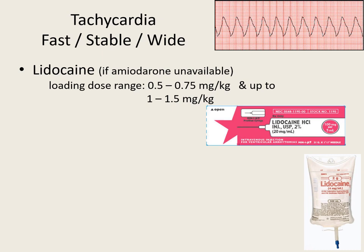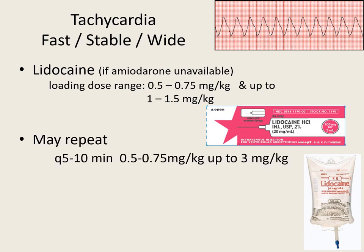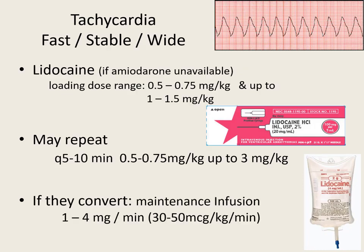So I went 1 mg per kg first. My next dose will be 0.5 mg per kg. We can continue that 0.5 every 5 to 10 minutes until we reach a max dose of 3 mg per kg — so 1, then 0.5, then 0.5, then 0.5, then 0.5 to reach 3 mg per kg total. Hopefully they convert, and we can start that drip at 1 to 4 mg a minute to keep them out of V-tach.